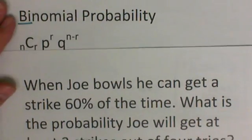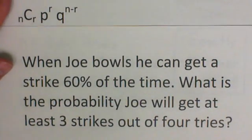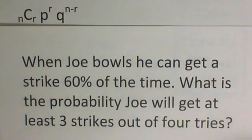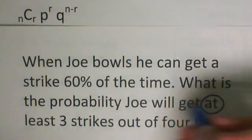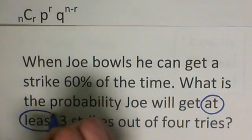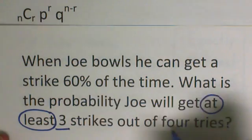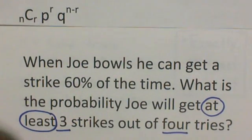Here's a question. When Joe bowls, he can get a strike 60% of the time. What is the probability Joe will get at least three strikes out of four tries. An important part of this is the at least. At least means that's the minimum, so at the minimum, we want three strikes out of four, but we could do anything better.